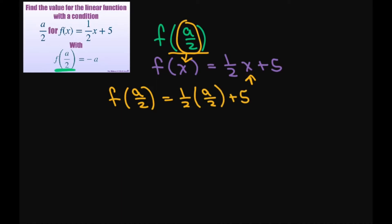Also it says this equals negative a. Now looking at this part right here, this is going to give me 1 divided by 4 or a divided by 4 plus 5 equals negative a.